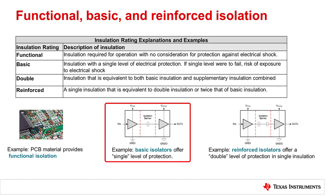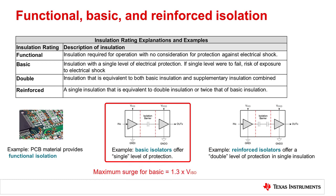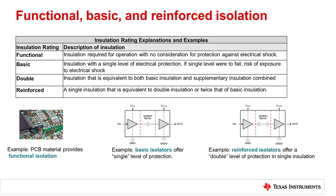Basic isolation provides a single layer of isolation protection against electrical shock as long as the insulation barrier is intact. This means that if the isolation barrier is breached, no additional barrier of protection remains. To receive the rating of a basic digital isolator with the surge test, the component must pass the surge test at 1.3 times their isolation rating. Basic isolators commonly have isolation ratings of 2.5 to 3 kV, but in some cases a basic device may have an isolation rating of up to 5 kV. High voltage systems require basic isolation to be supplemented with a secondary isolation barrier for redundancy to provide added shock protection in the event that the first barrier fails.